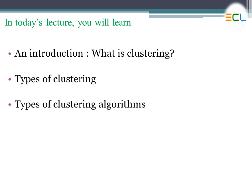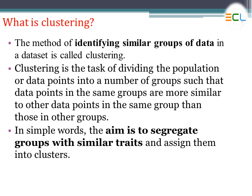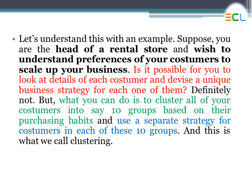Now let's look at the different definitions of clustering. First, the method of identifying similar groups of data in a dataset is called clustering. In another context, clustering is the task of dividing the population or data points into groups such that data points in the same group are more similar to each other than to those in other groups. In simple words, the aim is to segregate groups with similar traits and assign them into clusters.